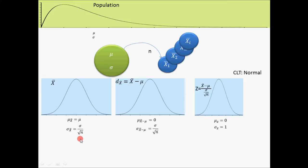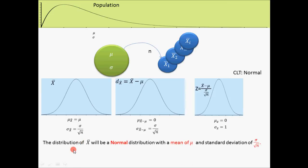We discovered that the distribution of sample means has the following properties: mu of x bar is the mu of the population, and the standard deviation of x bar is the standard deviation of the population divided by square root of n — that is, sigma of x bar equals sigma of the population divided by square root of n.